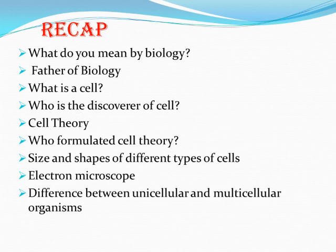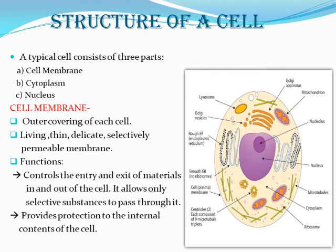Let us start with the second part of this chapter: the structure of a cell. We studied how it was discovered, the cell theory, and different types of cells. Now we will deal with what a typical cell — a normal cell with all the minimum structures — looks like.